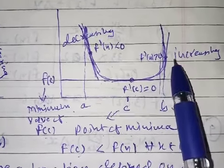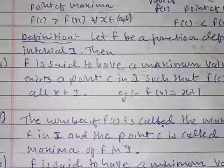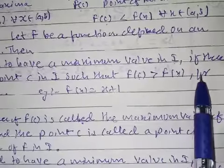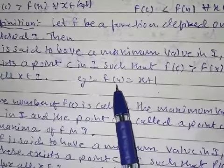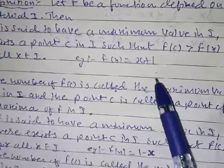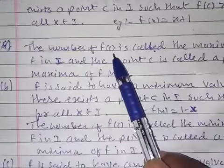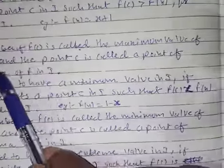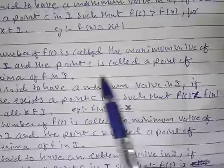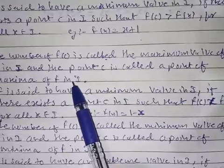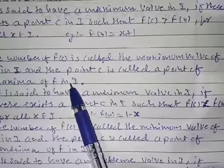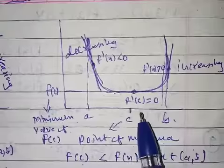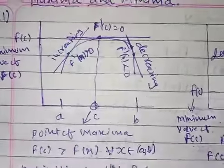So f is said to have a maximum value in I if there exists a point c in I such that f(c) is greater than f(x) for every x belonging to I. For example, f(x) = x + 1. Whatever value f(c) gives, f(c) is called the maximum value of f in I, and the point c is called the point of maxima of f in I.